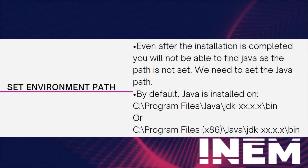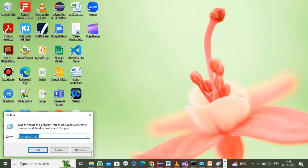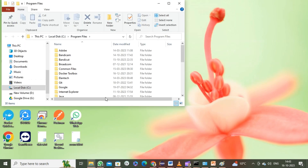Even after the installation is completed, you will not be able to find Java because the path is not set. So we need to set the Java path. By default, Java is installed in one of these standard paths. To ensure Java is recognized, follow these steps.